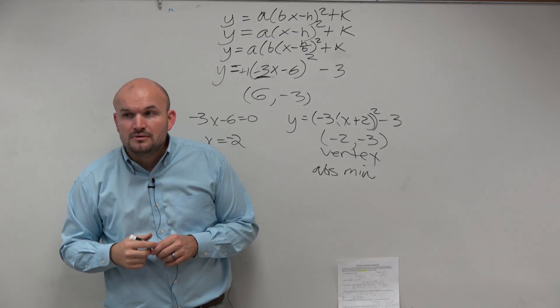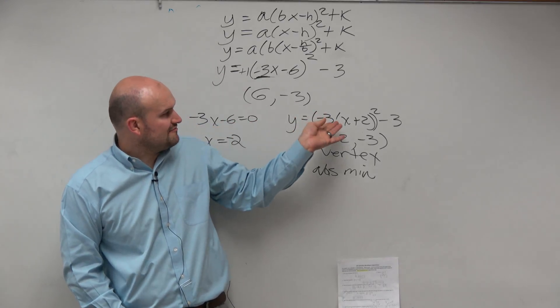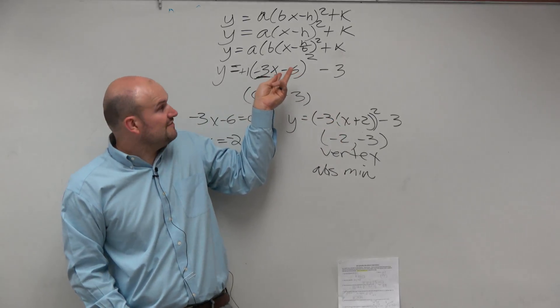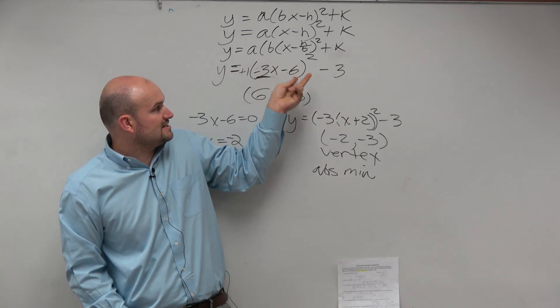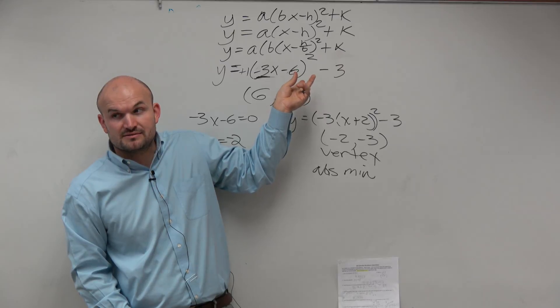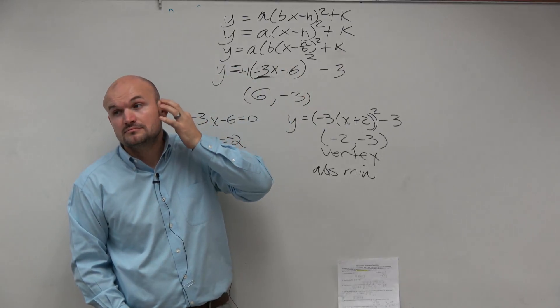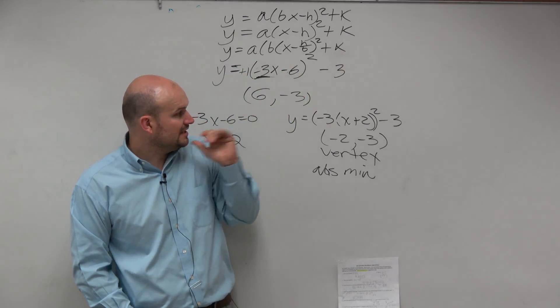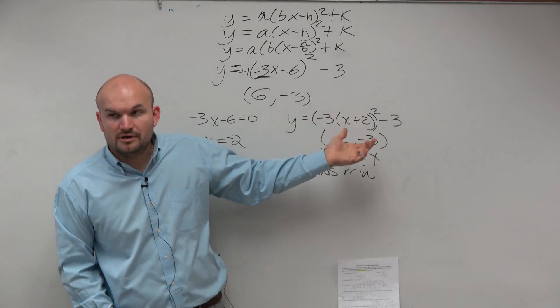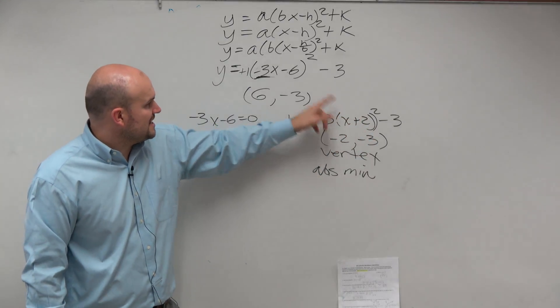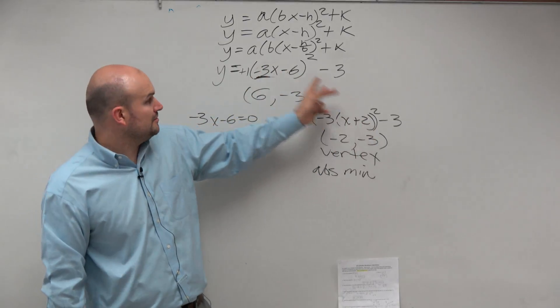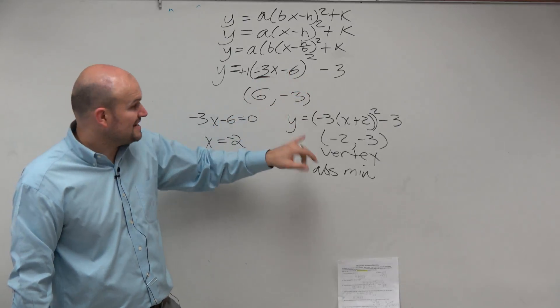Yes? Why are there parentheses around the negative 3? Because I factored out the negative 3. I divided out a negative 3 from negative 3x and I divided a negative 3 from negative 6. So why do you need to separate that? Well, this is the same thing. What's negative 3 times x? Negative 3x. What's negative 3 times 2? Negative 6.